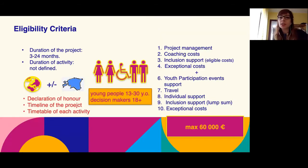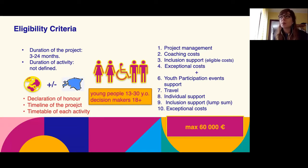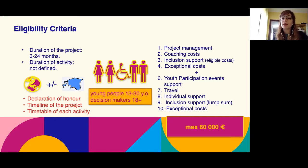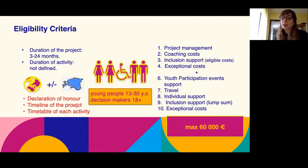Regarding eligibility criteria: the duration of projects is the same as in Key Action 1 — three to 24 months. The activities are not defined, meaning there is no minimum or maximum number of days required per activity. This is the only action type in Erasmus+ that allows both local and international projects. For partner countries, since you cannot apply locally, the international activities are of course more relevant. The action type is meant for young people aged 13 to 30, and decision makers who are 18 plus.